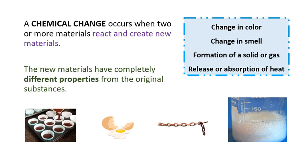There are four indicators for a chemical change. The first one is change in color. For example, when iron reacts with the oxygen in the air outside, it produces rust. So the color of the iron changes from silver to reddish-brown.